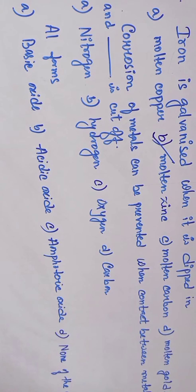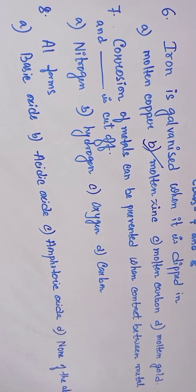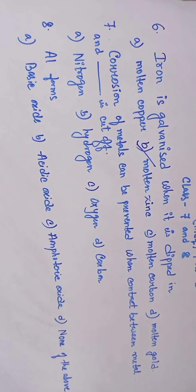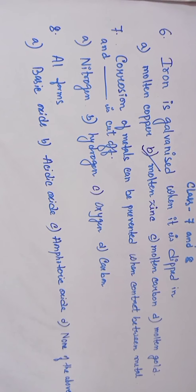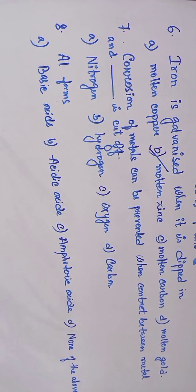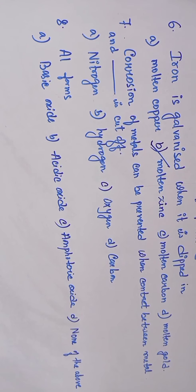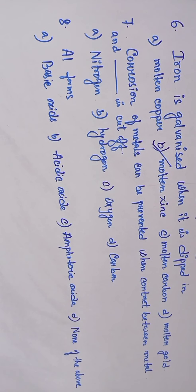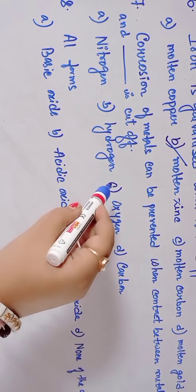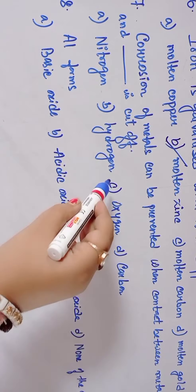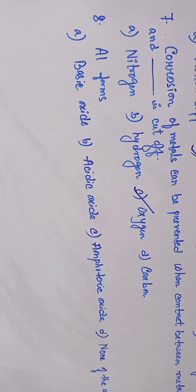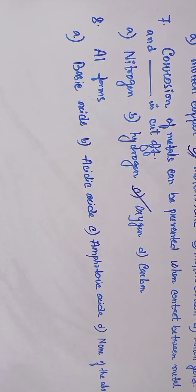Question Number 7: Corrosion of metals can be prevented when contact between metal and dash is cut off. Option A: nitrogen, Option B: hydrogen, Option C: oxygen, Option D: carbon. Answer is Option C: oxygen. Corrosion of metals can be prevented when contact between metals and oxygen is cut off.